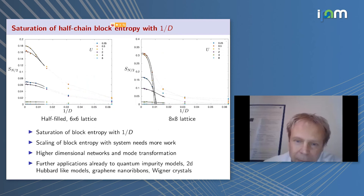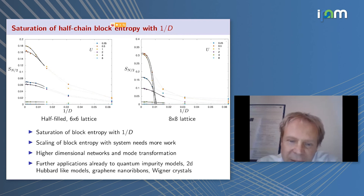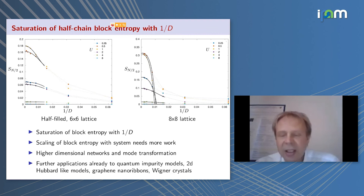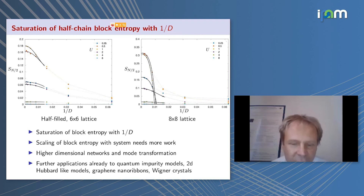As a function of inverse bond dimension, the entropy saturates with increasing bond dimension — a nice feature. Finite system-size analysis of block entropy in optimized modes requires more accurate data. There has been work applying mode optimization to higher-dimensional networks and trees, but we must combine mode and network optimizations together before making rigorous statements about scaling and area laws.